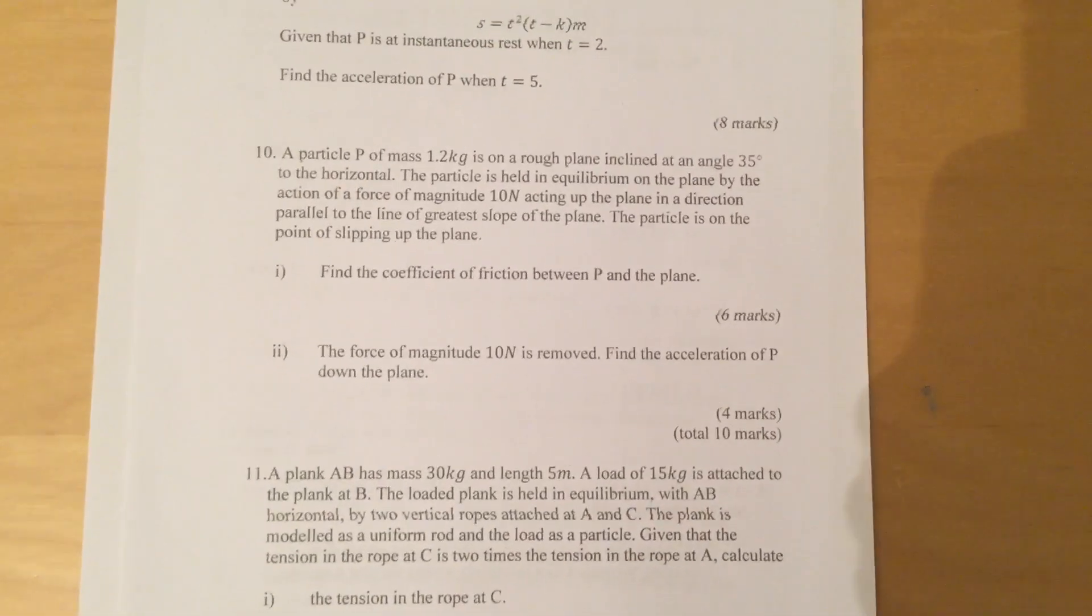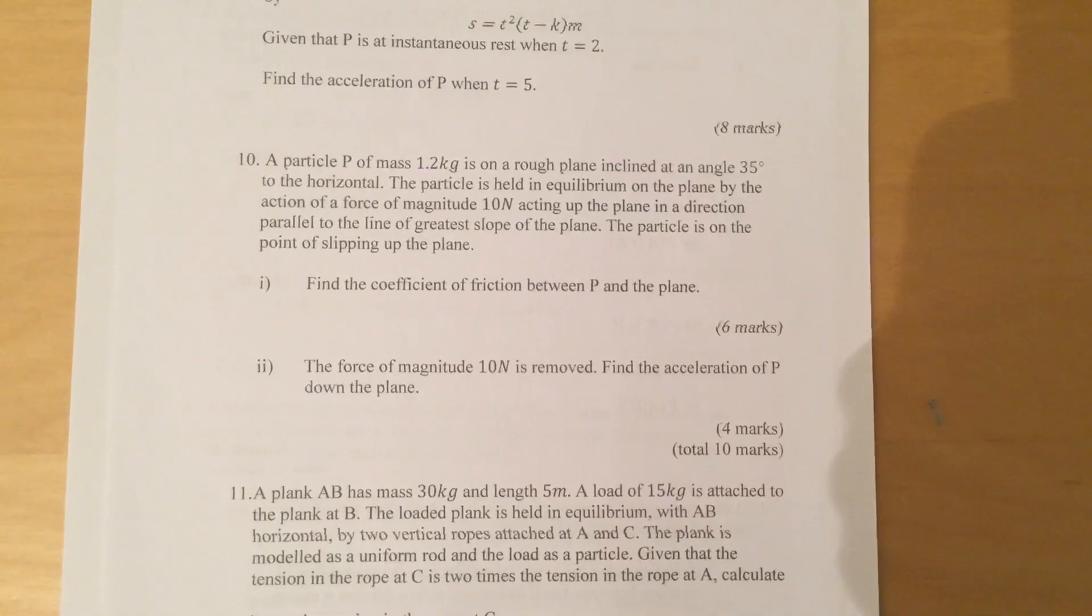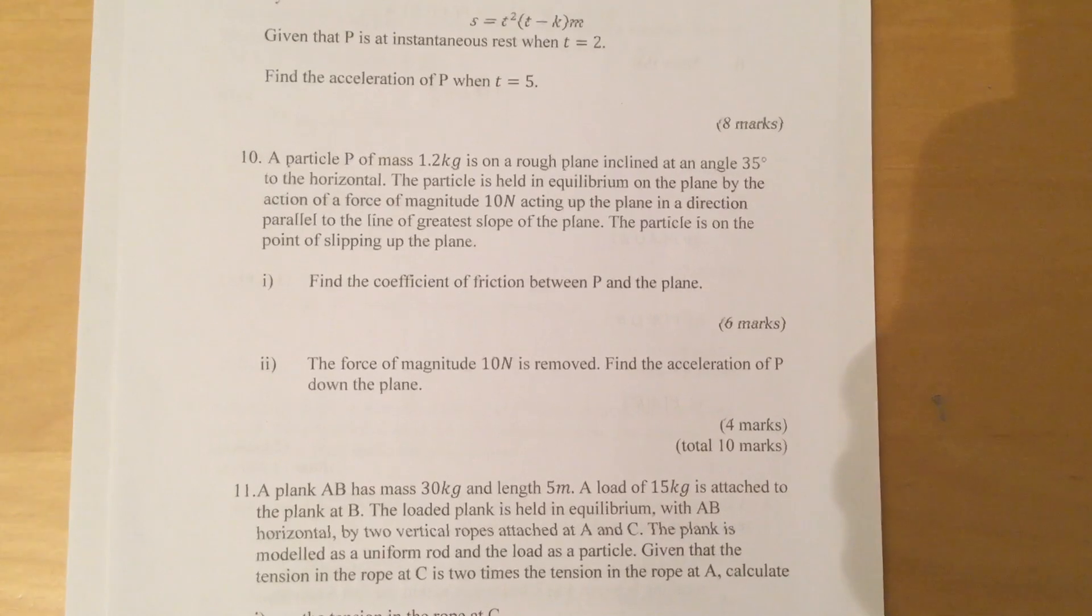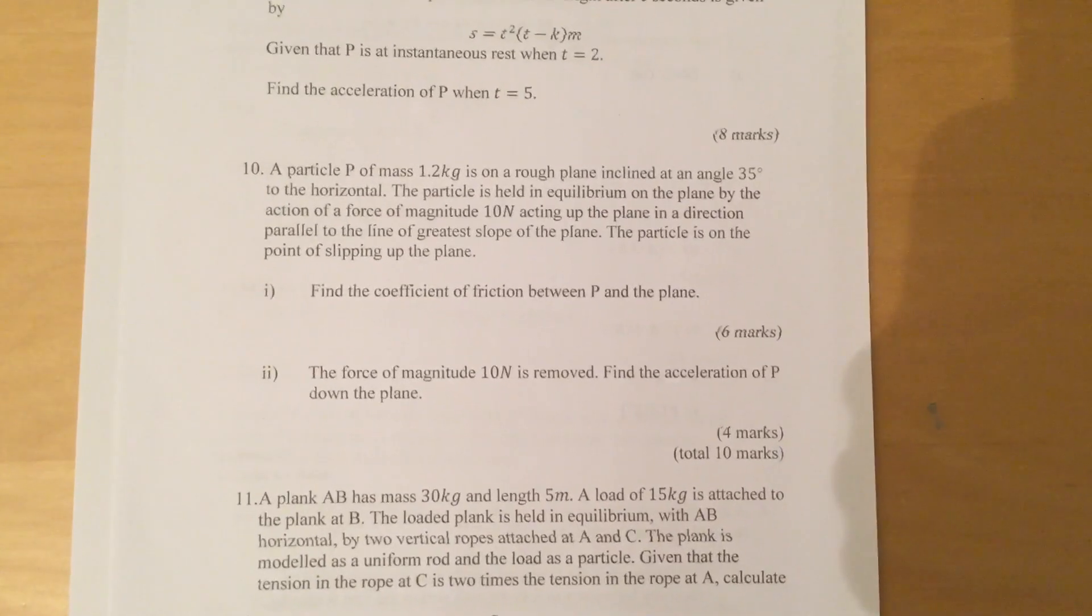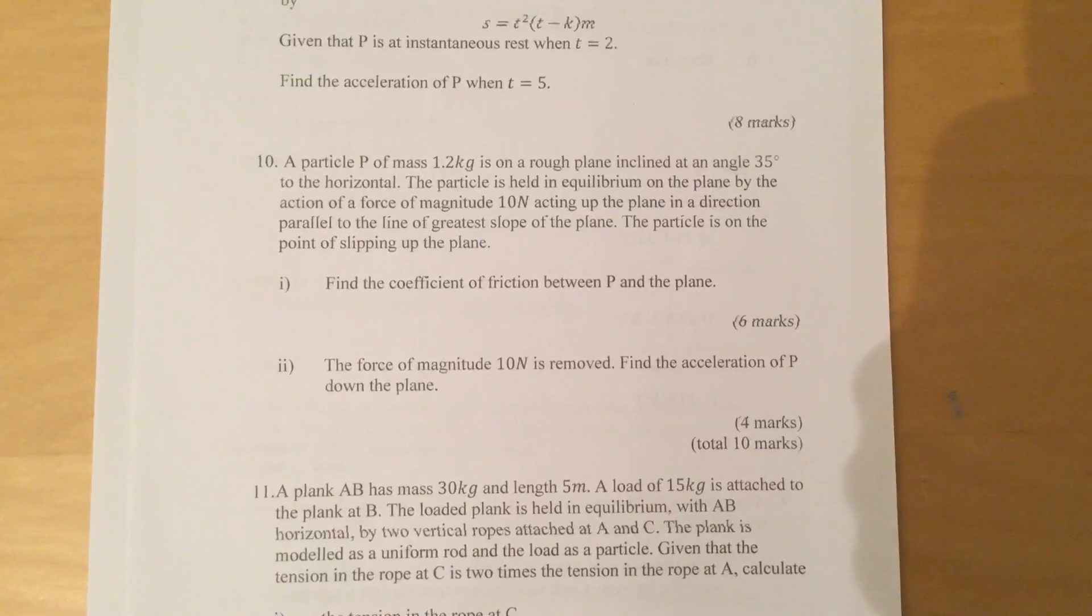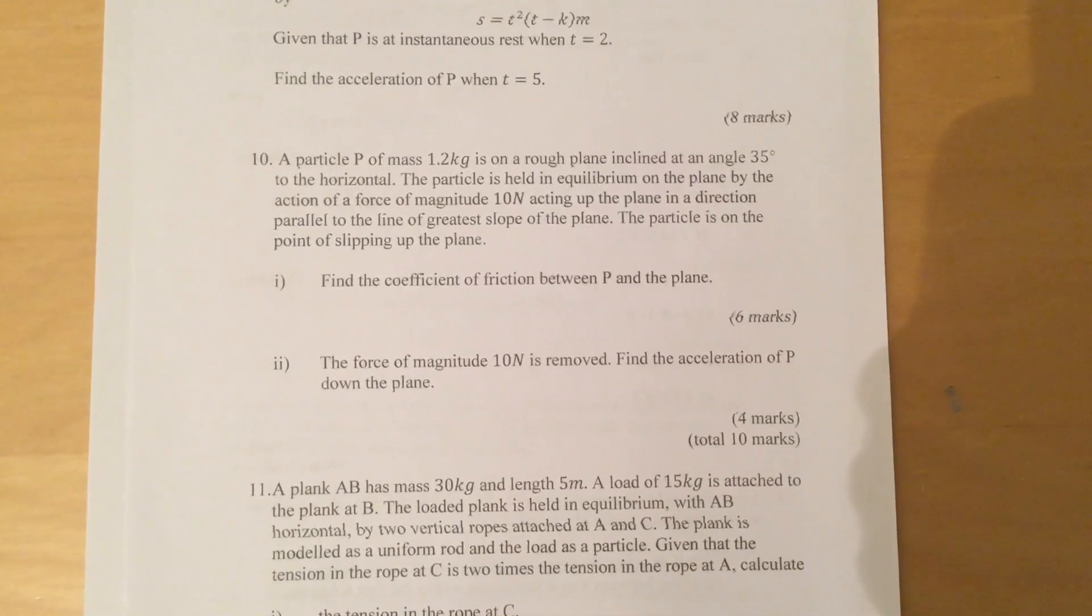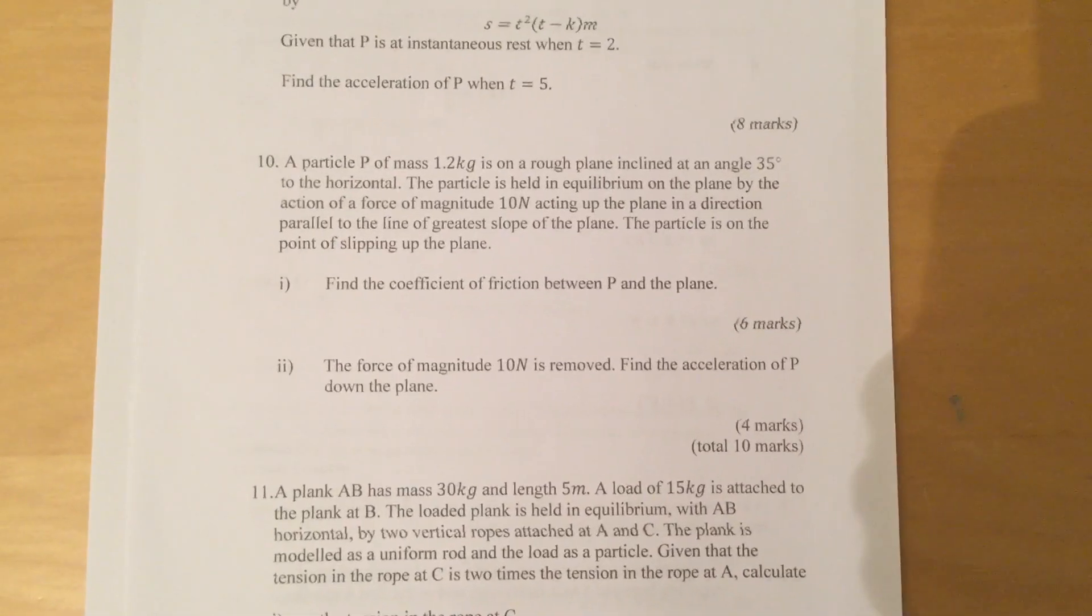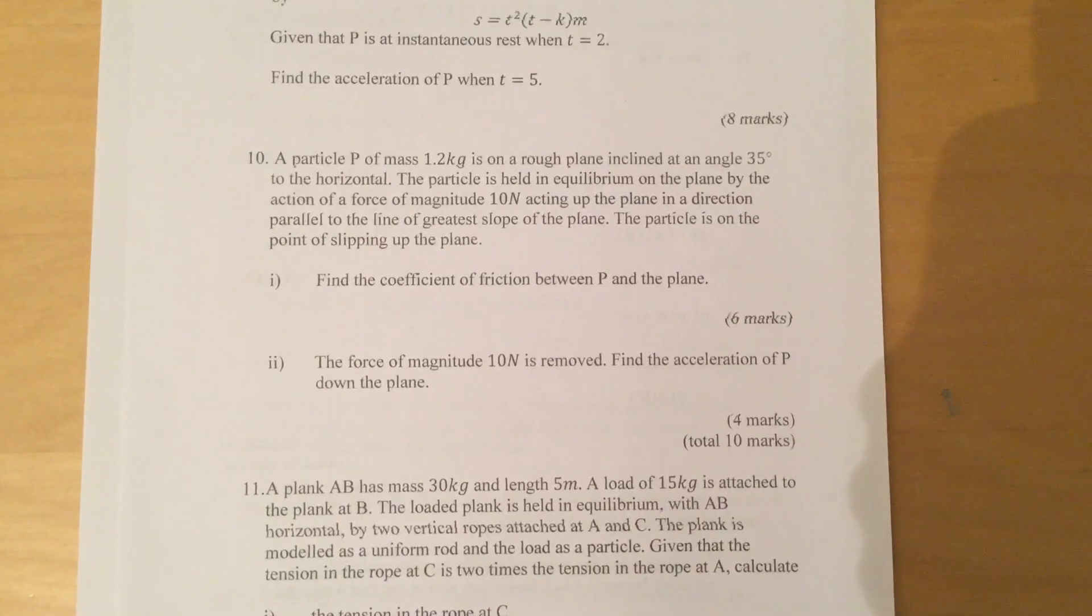Question 10: A particle P of mass 1.2 kg is on a rough plane inclined at an angle 35 degrees to the horizontal. The particle is held in equilibrium on the plane by the action of a force of magnitude 10 newtons acting up the plane in a direction parallel to the line of greatest slope of the plane. The particle is on the point of slipping up the plane.